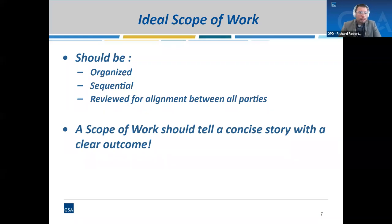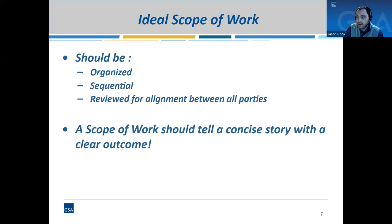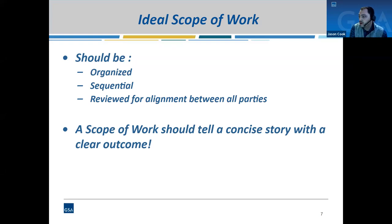When developing our ideal scope of work, we need to make sure it is clear and understandable. We look for it to be organized — ideally in an industry standard form — and sequential so it is logical for users and stakeholders to understand. We also want to review alignment between stakeholders and all parties involved in the project, making sure all requirements are accounted for in the scope of work, whether through assumptions or a risk assessment. The scope of work overall needs to be concise and tell the story of the project so we can understand the costs associated with all the work included.